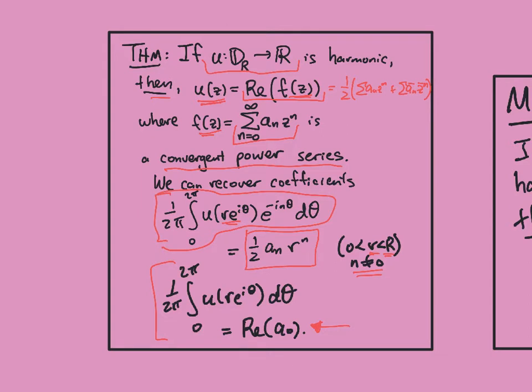So the first part of the theorem we've already basically proven, and the second part I can just leave as an exercise where you just write out the series in question and integrate against e to the minus i n theta, and we just have to use the fact that e to the i n theta d theta from 0 to 2π equals 1 for n equals 0, and 0 when n is not 0.